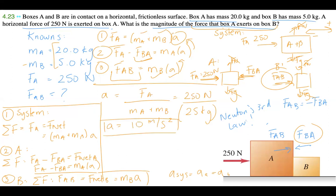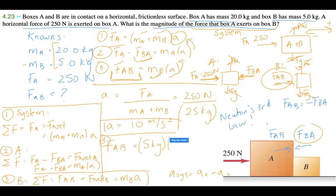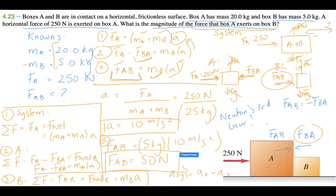Now we have the acceleration, so we can use equation 3. F_AB equals m_B times acceleration, which is 5.0 kilograms times 10 meters per second squared, giving us 50 newtons. So the force A exerts on B is 50 newtons. Thank you for watching — if this was helpful, please like and subscribe, and feel free to leave questions in the comments.